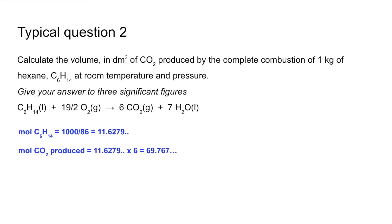Then all we're going to do is multiply that by 24 to get the equivalent decimeters cubed at RTP. So that's how many dm³ of CO₂ are produced. And to three significant figures, 1670.